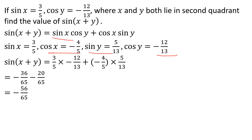So with sin x equals 3/5 and cos y equals minus 12/13, both in the second quadrant, the value of sin(x+y) equals minus 56/65.